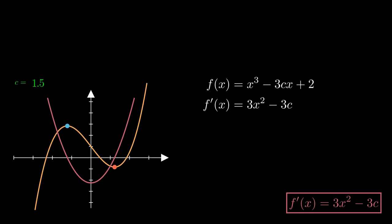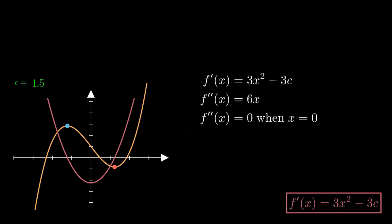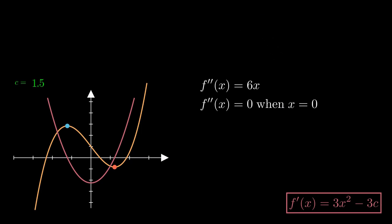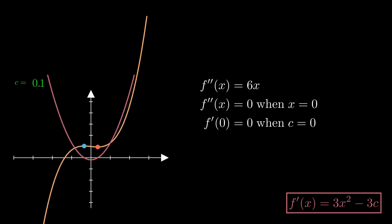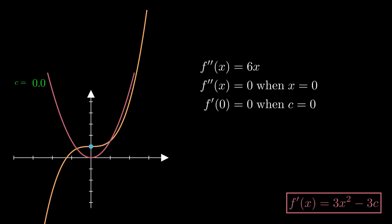For Part C, we first find the point of inflection using the second derivative set equal to 0. The second derivative is 6x, which is only 0 when x = 0. Then we need the value of c when the point of inflection also has a gradient of 0. We put x = 0 into the first derivative, and it becomes 0 only if c is also 0. So c = 0 is the condition for the inflection point to have zero gradient.